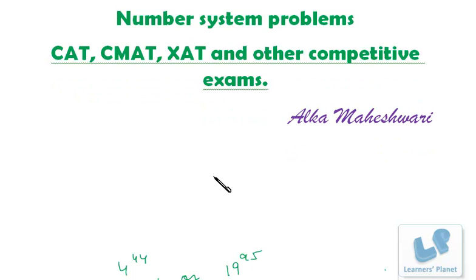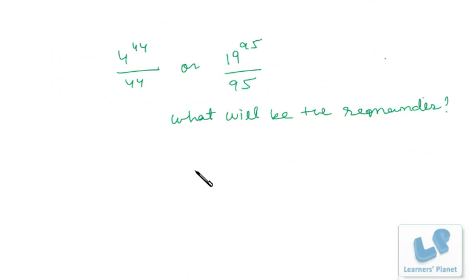The questions are: 4 raised to 44 divided by 44, and 19 raised to 95 divided by 95. In both cases, what will be the remainder?